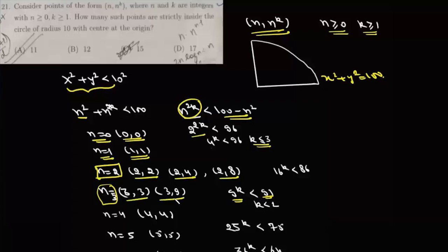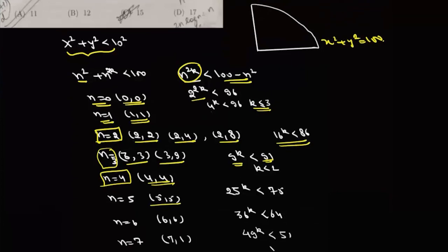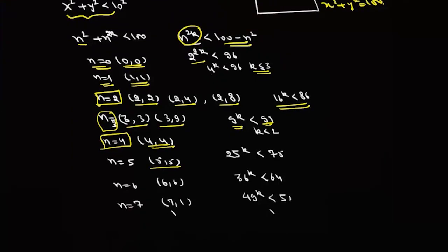Now for n equals 4, we'll have 4^(2k), that is 16^k, less than 84. Now 16^2 is 256, so only one value is possible, so there will be (4, 4). In the same way, it'll be (5, 5), (6, 6), and for n equals 7, we'll have 7^2 = 49, which should be less than 51, so there'll be (7, 7).